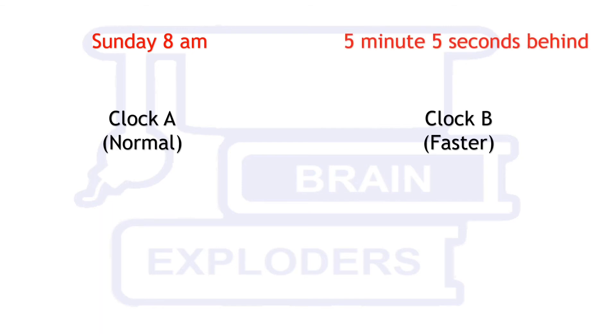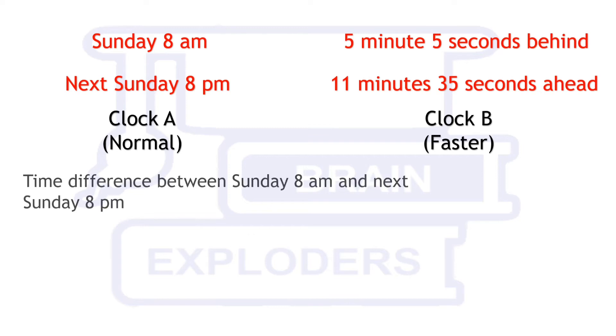Let's come to our question. The time difference between Sunday 8 am and next Sunday 8 pm is 12 hours more than a week, which equals 180 hours.